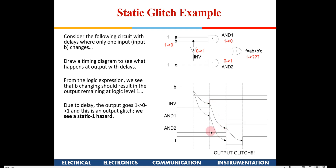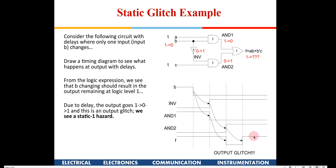Once the inverter goes high, the second AND gate goes high after one more gate delay. So the top AND gate goes low early, while AND2 goes high only after two gate delays. In between, both AND gates are simultaneously low, causing the OR gate output to momentarily go to zero, creating a glitch at the output.